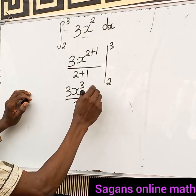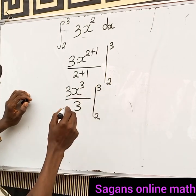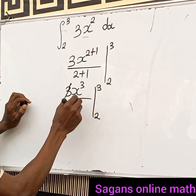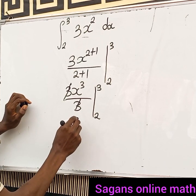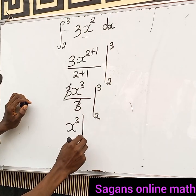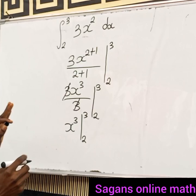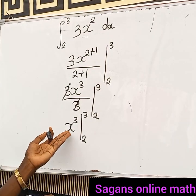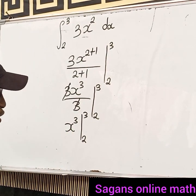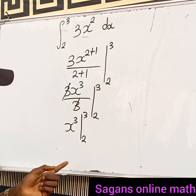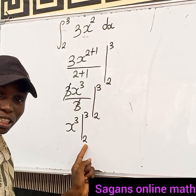We are already done with the integration. This integrates to x to the power of three, and our boundaries go from two to three. What we are going to do is substitute your upper limit minus your lower limit — this is very important.